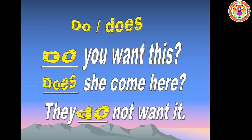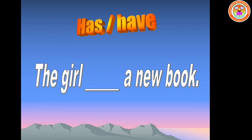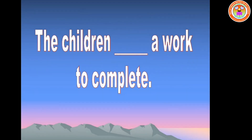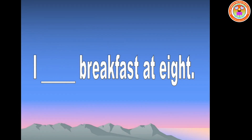Next exercise: has or have. First: the girl dash a new book. The girl is a singular subject, so we have to use has. The girl has a new book. Next: the children dash a verb to complete. The children is a plural subject, so we have to use have. The children have a verb to complete. Next: I dash breakfast at eight. After I, we have to use have. The answer is have. I have breakfast at eight.